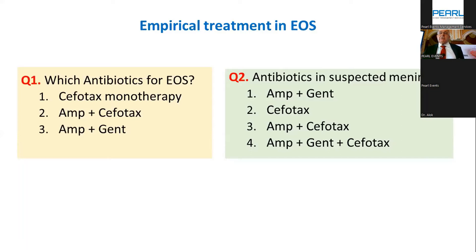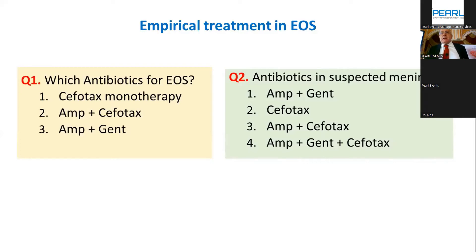If confirmed to be gram-positive, GBS, or Listeria, the recommendation for meningitis is 14 days full treatment with ampicillin and gentamicin. I keep gentamicin for synergy with ampicillin and for ESBL coverage until I get the result. Once the result comes, if gram-positive I keep ampicillin and gentamicin; if gram-negative I give only ampicillin and gentamicin or cefotaxime if beta-lactamase.